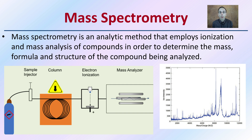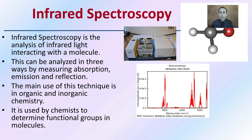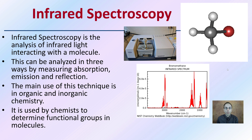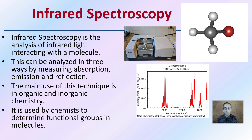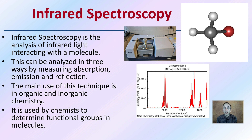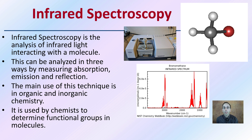Lastly, we have infrared spectrometry, which is the analysis of a molecule using infrared light interaction. It can be analyzed in three ways: by measuring absorption, emission, and reflection. The main use of this technique is in organic and inorganic chemistry, where chemists use it to determine the functional groups in molecules. It is another great laboratory-based test for specifically identifying the compounds in a substance initially brought into the lab.